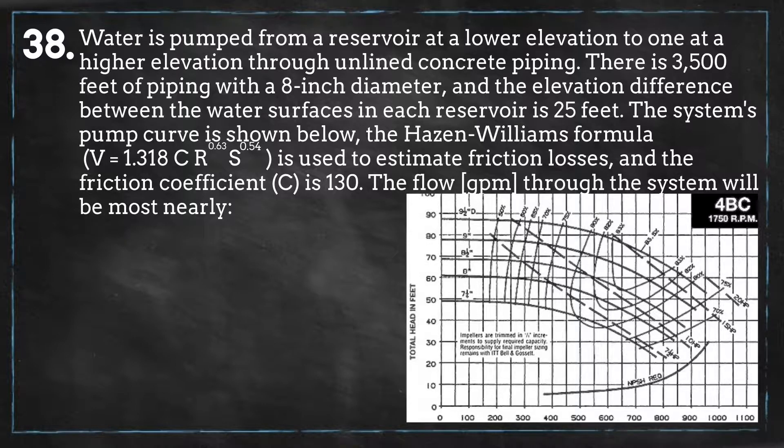Water is pumped from a reservoir at a lower elevation to one at a higher elevation through unlined concrete piping. There is 3,500 feet of piping with an 8-inch diameter and the elevation difference between the water surfaces in each reservoir is 25 feet.